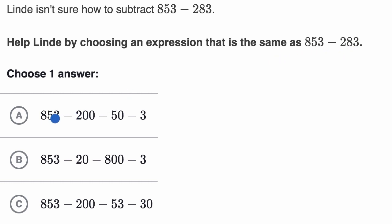Alright, when we look at all of the choices, they all start with 853. Now this first choice, they subtract out 200. That makes sense because we have 200 right over there. Then they subtract out 50 and then they subtract out 3. So the 200 and the 3 make sense.